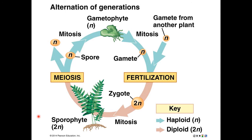Land plants possess two multicellular generations: what we call the gametophyte generation, which is haploid, and what we call the sporophyte generation, which is diploid. It's called alternation of generations because each generation is responsible for the processes that in turn create the other generation. So it's a cycle.